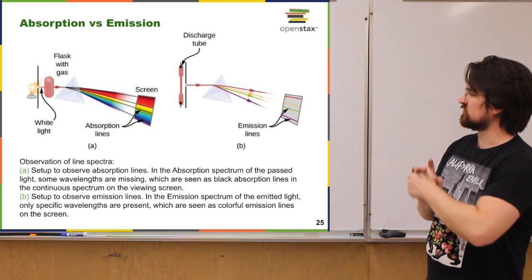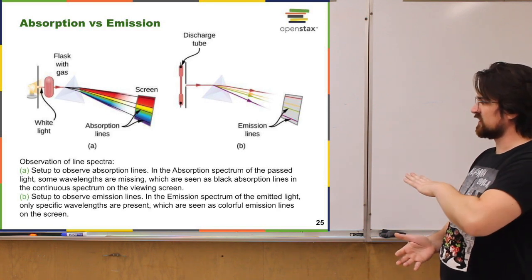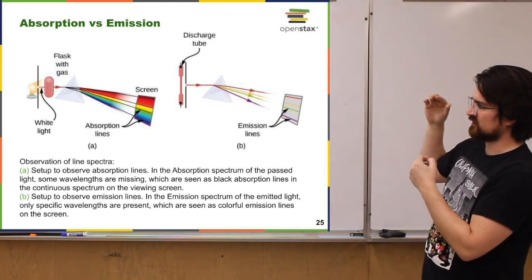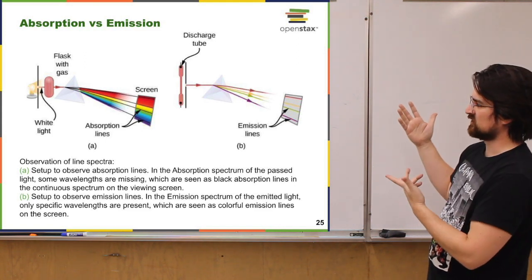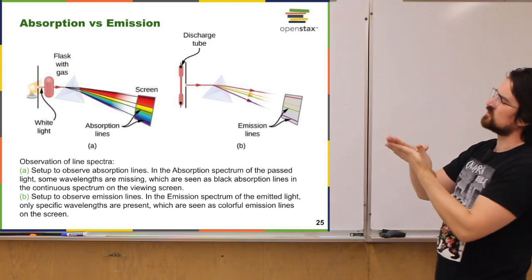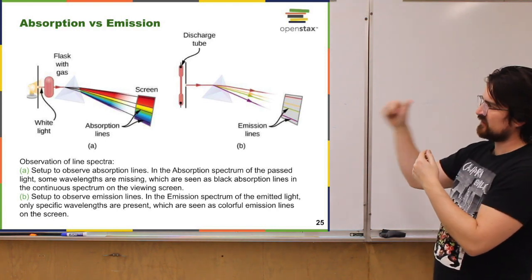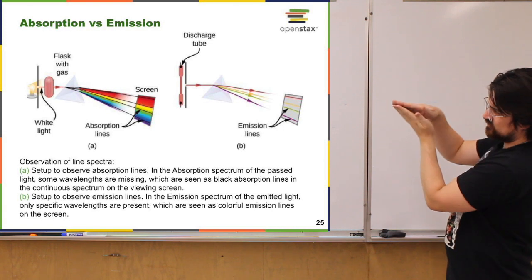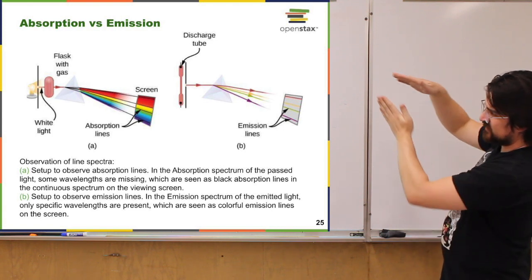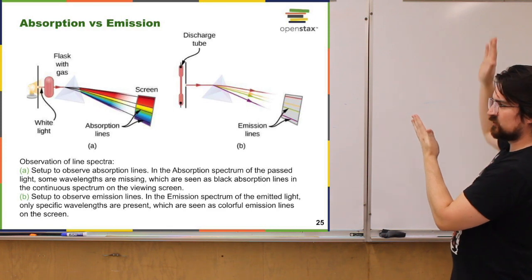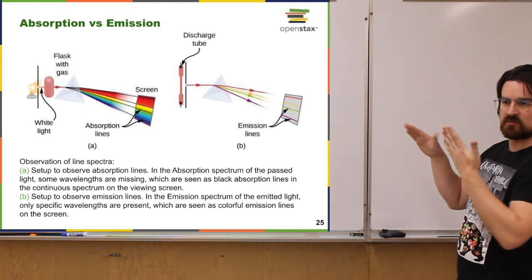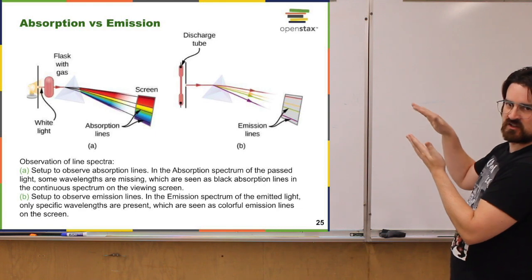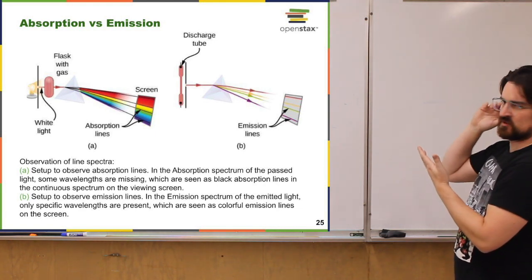If you think about absorption versus emission of light, we can understand those by looking at two setups. In setup A, showing absorption: you start with white light — the full spectrum from red to violet — send it through a gas, then spread it out with a prism. On a screen, you can see the full spectrum, but some wavelengths are absorbed by the gas. That's why you get dark lines. These are all the wavelengths that did not make it through the gas — we call them absorption lines.